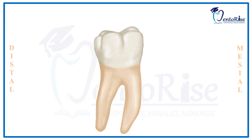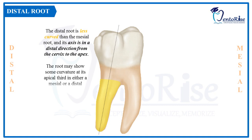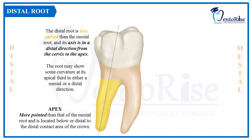The distal root is less curved than the mesial root. The axis of the distal root is in a distal direction from the cervix till the apex. The root may show some curvature at the apical third in either a mesial or distal direction. The apex of the distal root is more pointed than that of the mesial root, and is located either below or distal to the distal contact area of the crown.